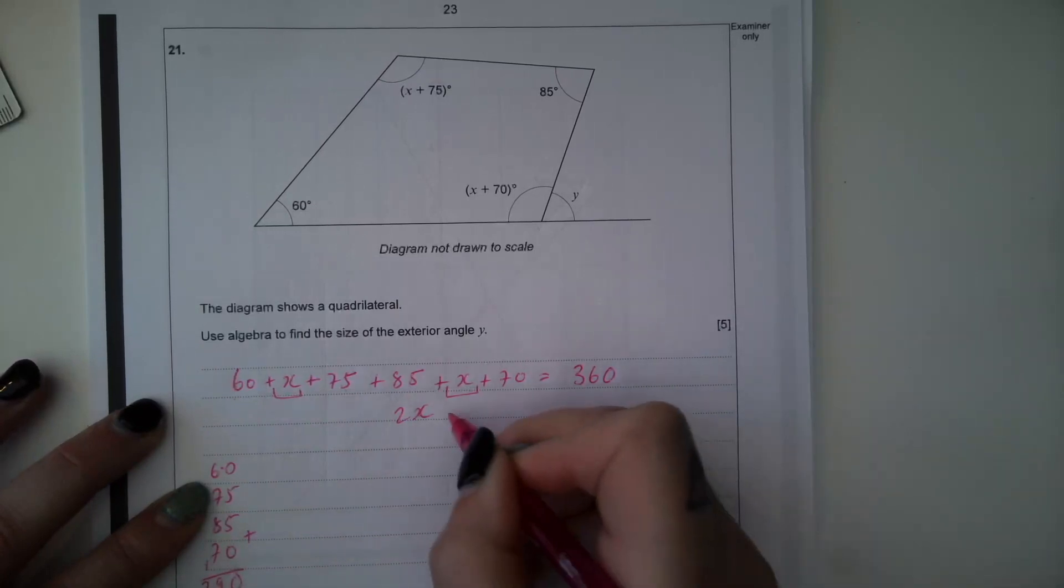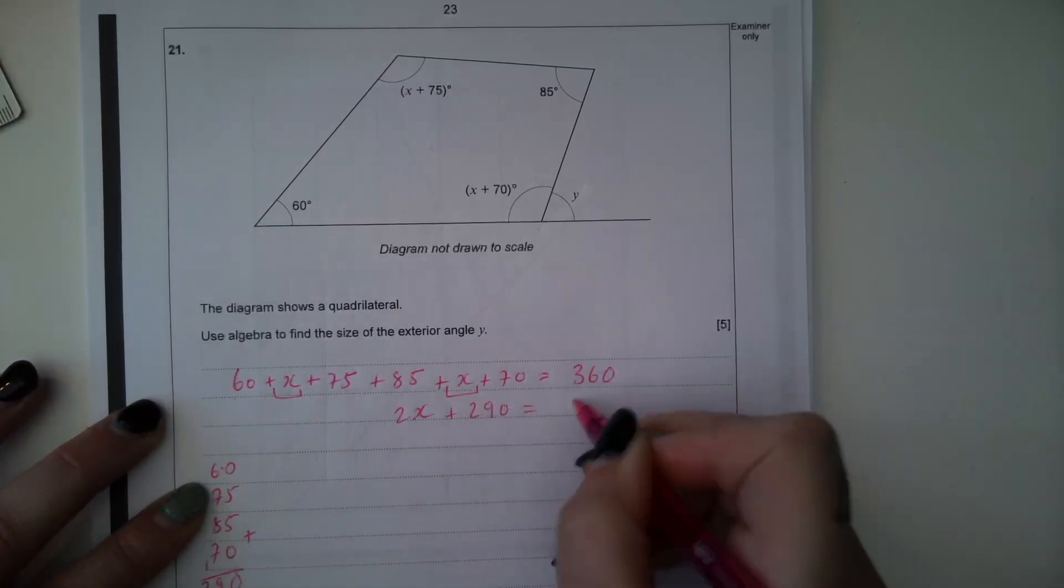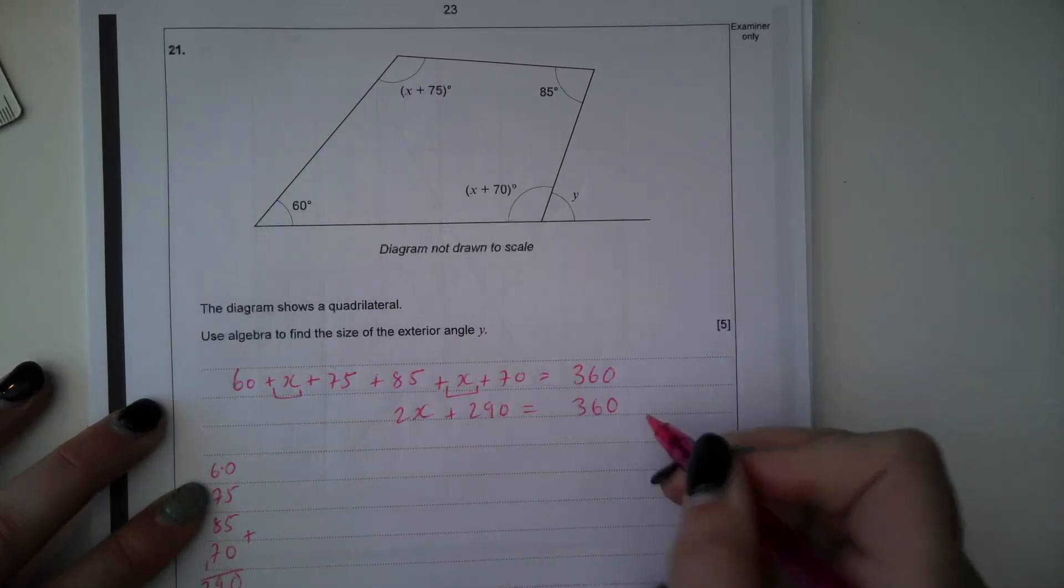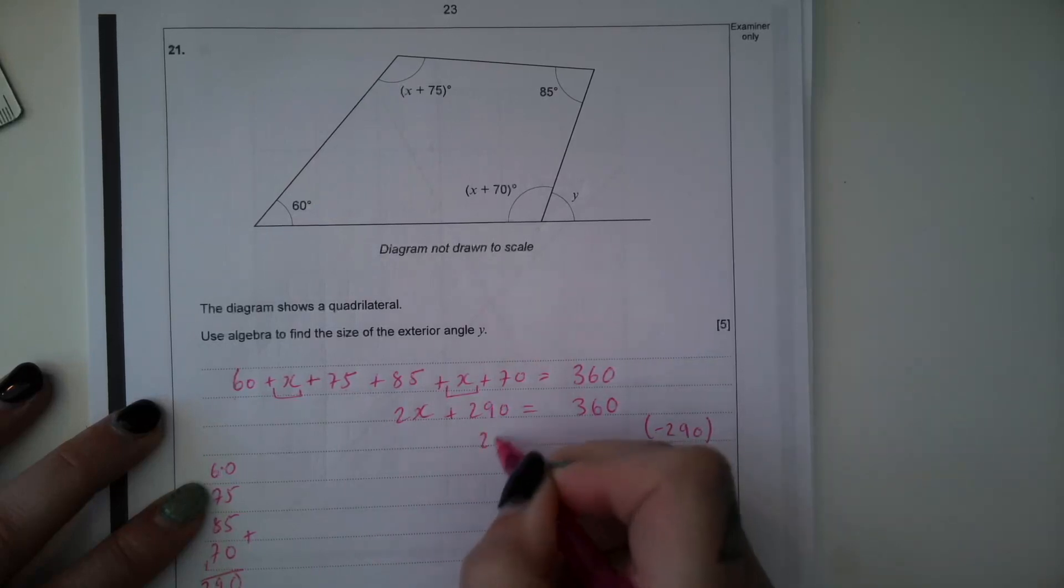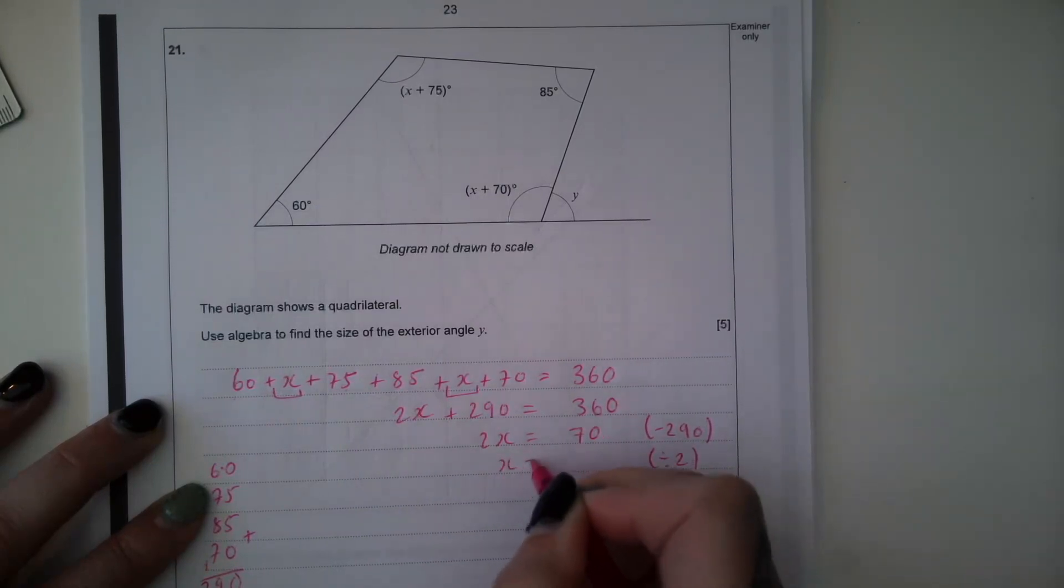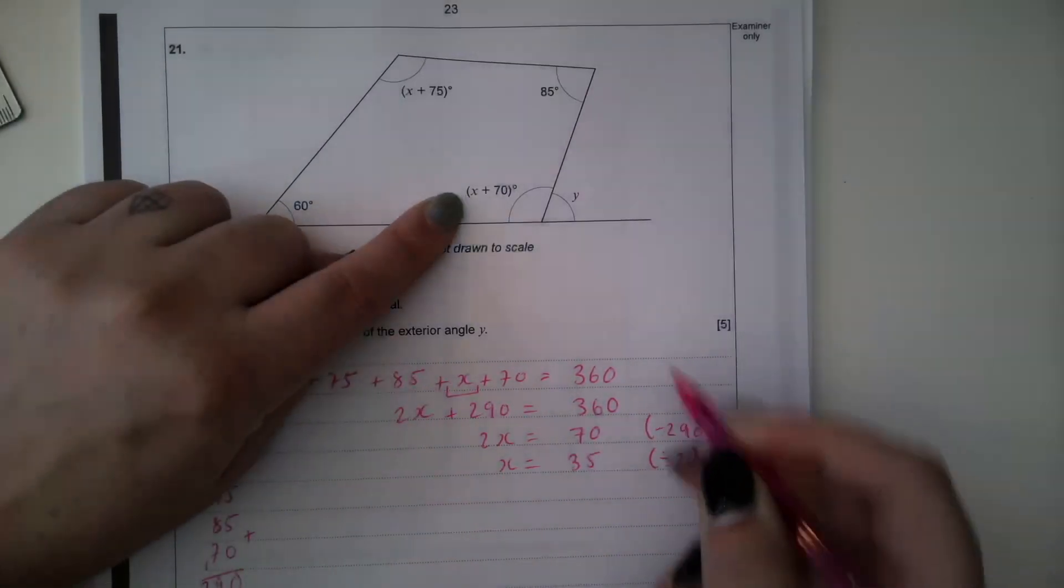So 2X plus 290 equals 360. We're now going to solve this for X. So the inverse of adding 290 would be to subtract 290. And the inverse of multiplying by 2 would be to divide by 2. So X is equal to 35.